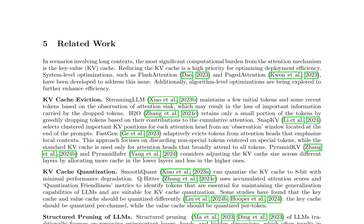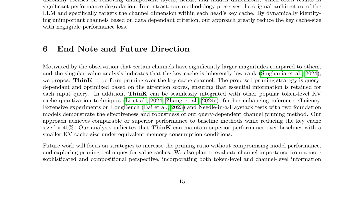The proposed THINK methodology targets the key-value cache in large language models, specifically focusing on the channel dimension within each head's key cache. This approach dynamically identifies unimportant channels based on data-dependent criteria, reducing the key cache size with negligible performance loss. The pruning strategy is query-dependent and optimized based on attention scores, ensuring essential information is retained for each input query. Recent studies have explored various techniques including KV cache eviction (Streaming LLM, H2O, SnapKV, FastGen) and quantization (SmoothQuant, Q-Hitter).